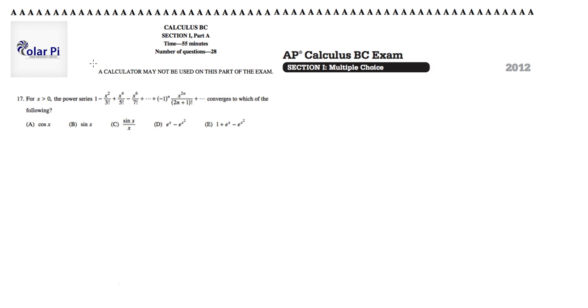So in problem 17, it says for x greater than 0, the power series that, and they've showed us the general term here, converges to which of the following? Okay, so basically, they're claiming that this is a convergent series, and we need to figure out which of these answers it converges to.